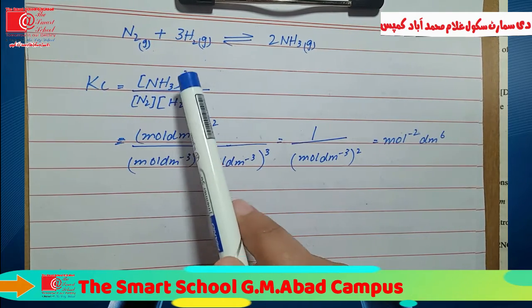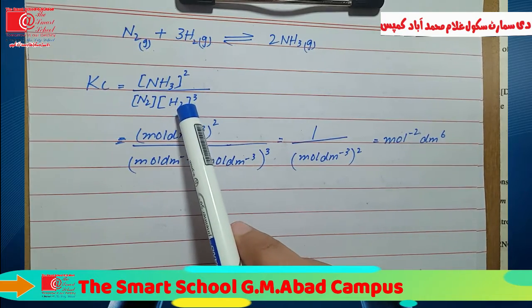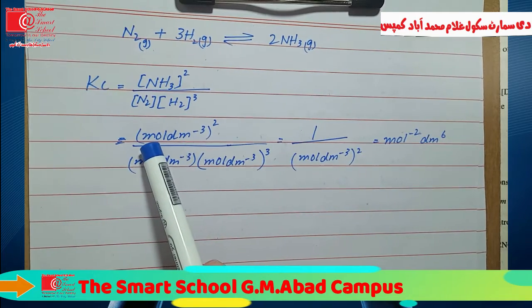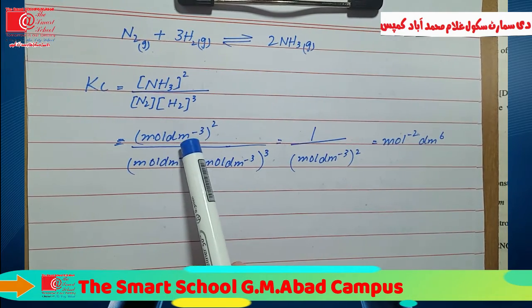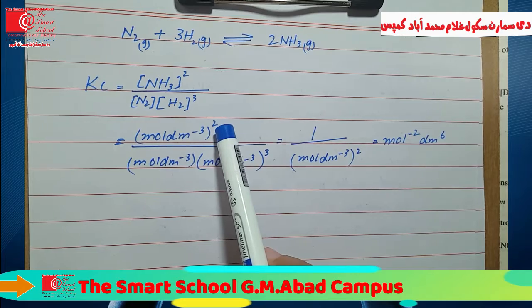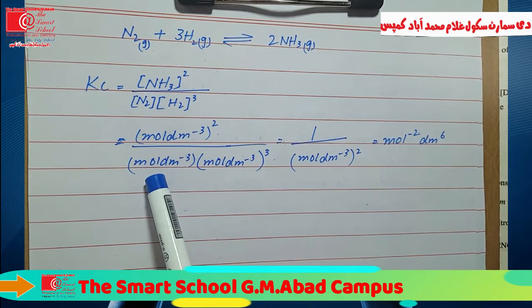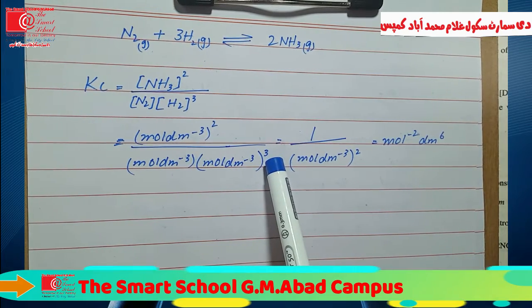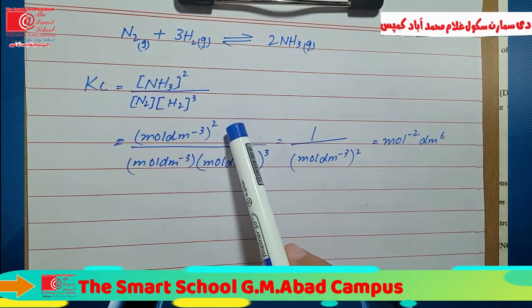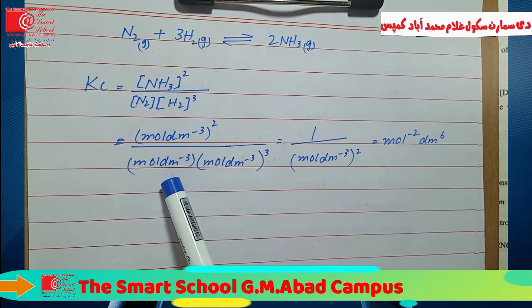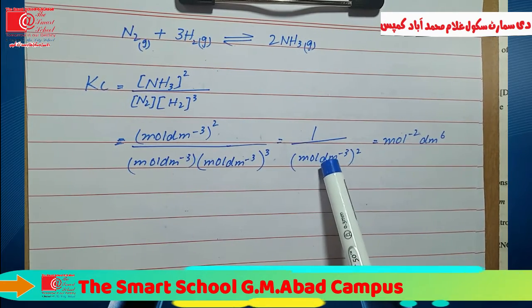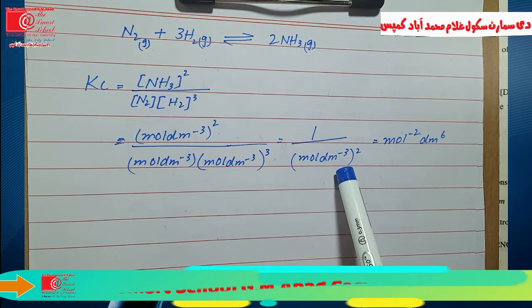Just to clarify: the power of 3 applies only to hydrogen, not to nitrogen. Now, if we substitute the units: in the numerator we have (mol/dm³)² giving 2 units, and in the denominator we have (mol/dm³)¹ × (mol/dm³)³ giving 4 units total. We cancel 2 from the numerator with 2 from the denominator, leaving 1/(mol/dm³)², which equals mol⁻²·dm⁶.